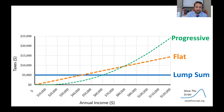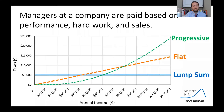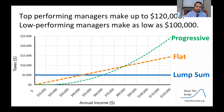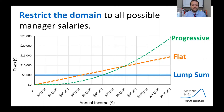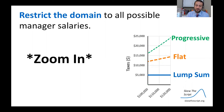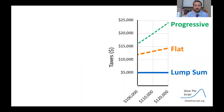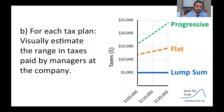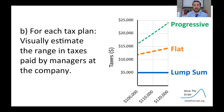On the other end of the spectrum, consider managers at a specific company. They're paid based on performance, hard work, and sales, and their salaries can range from one hundred thousand dollars for lower-performing managers to up to one hundred and twenty thousand dollars for top-performing managers. We'll restrict the domain to possible managerial salaries, and zooming in gives a larger, clearer image. Estimate the range in taxes paid by these managers under progressive, flat, and lump sum systems.